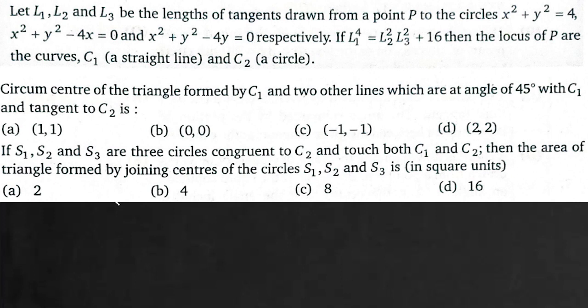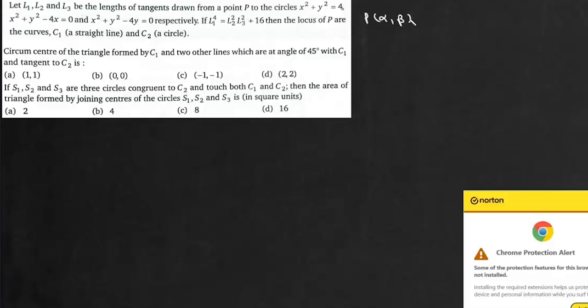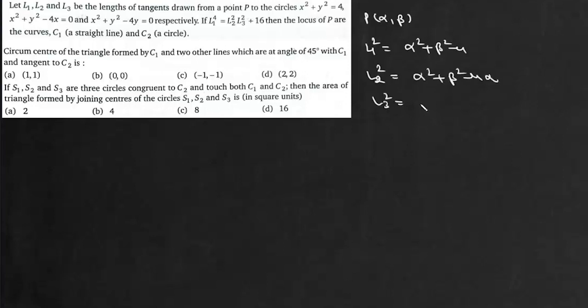The question states: let l1, l2, and l3 be the lengths of tangents drawn from point P to three circles respectively. Given that l1 to the power 4 equals l2·l3² + 16, find the locus of P, which consists of curve C1 (a straight line) and C2 (a circle). Suppose point P is (α, β). Then l1² = α² + β² − 4, l2² = α² + β² − 4α, and l3² = α² + β² − 4β.